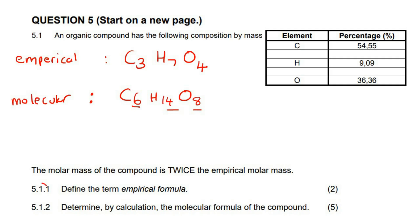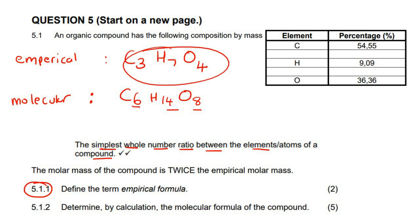So the first question says define the term empirical formula. So it is the simplest whole number ratio between the elements of a compound. So these are just the simplified, this one over here. It's the simplified whole number ratio of all of the elements.